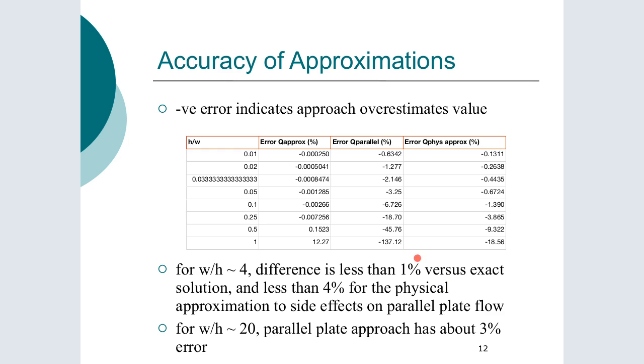Okay if we look at some plots as to how effective that is we can see the parallel plate solution and then the physical approximation and then the approximate value. You can see that the errors decay quite substantially so for an aspect ratio of four the difference is less than one percent compared to the exact solution and less than four percent for the physical approximation to the side effects. And when you go to w/h is about 20 the parallel plate approach has about three percent error. So for w/h about 20 the parallel plate approach is fine. When you get less than that and you're down around the w/h of 4 then you're better off using the exact or the approximation.